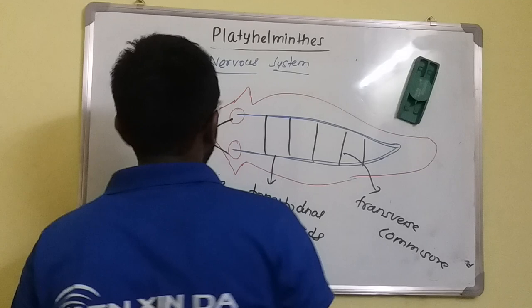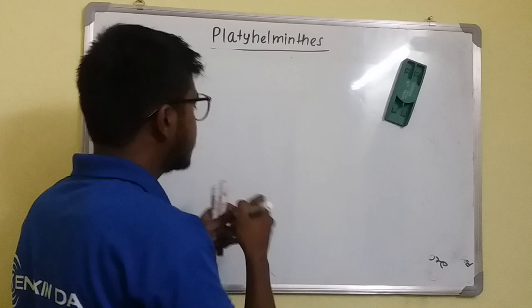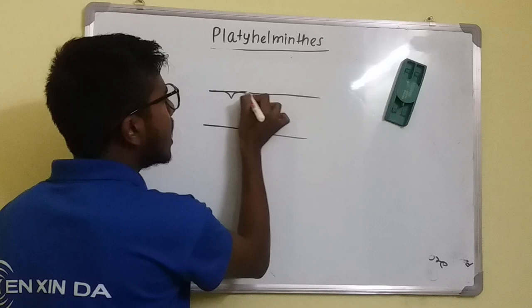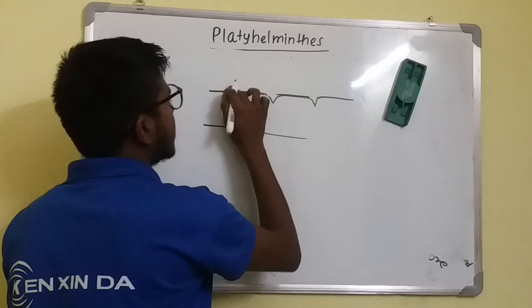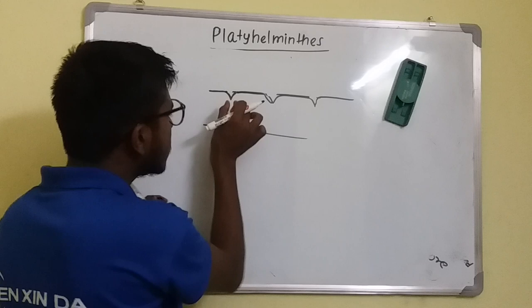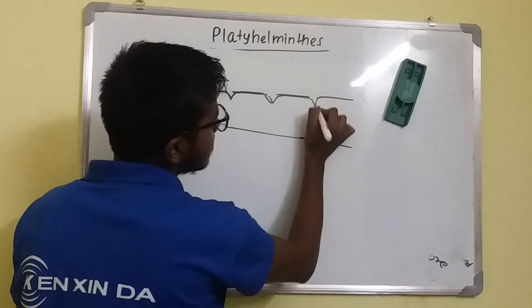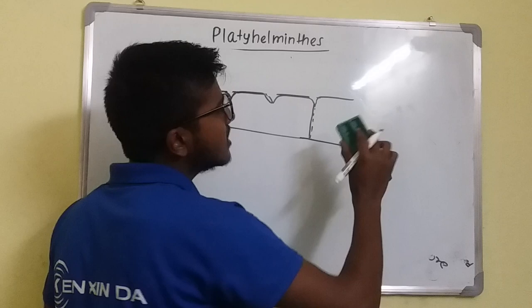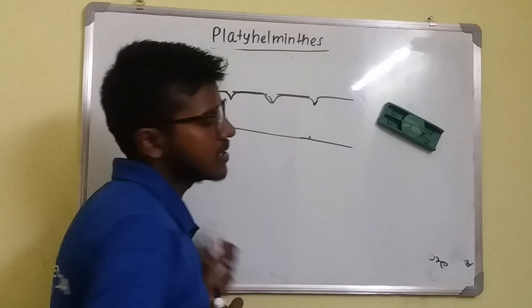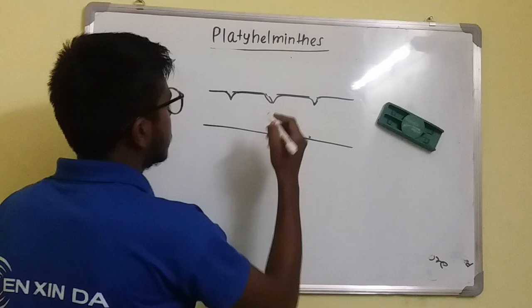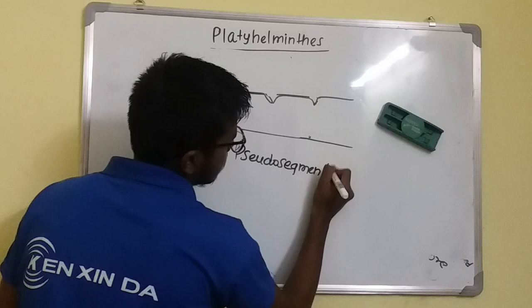Pseudo-segmentation is present: from the outside the body appears segmented, but this external segmentation does not correspond to internal segmentation. True (metameric) segmentation, as in Annelida, is absent. This outer-only segmentation is called pseudo-segmentation.